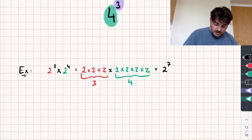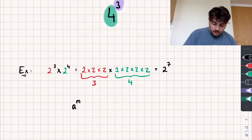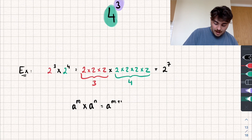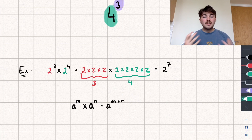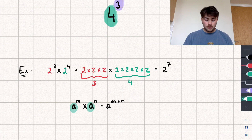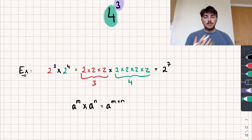This is our first law of indices: if we have a to the power of m multiplied by a to the power of n, that equals a to the power of m plus n. For this to hold, the base must be the same — the a at the bottom needs to be equal on both sides.